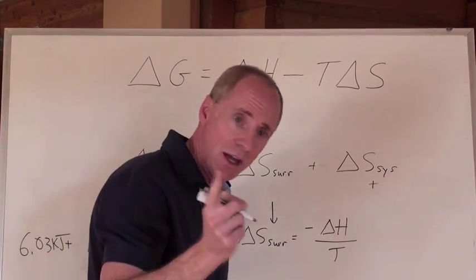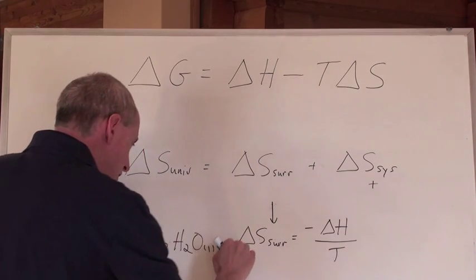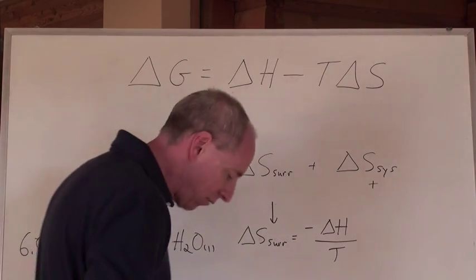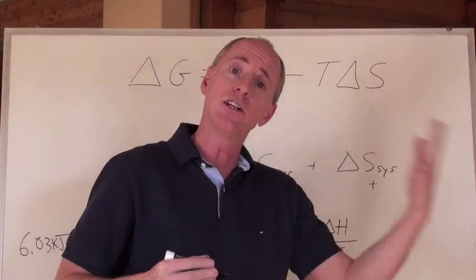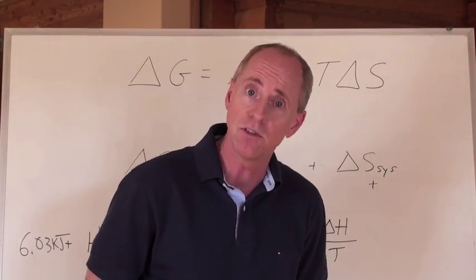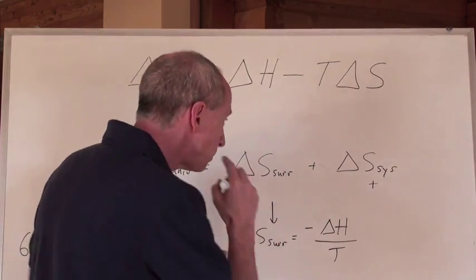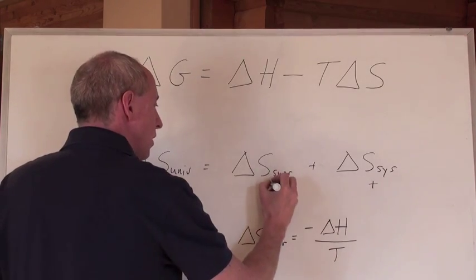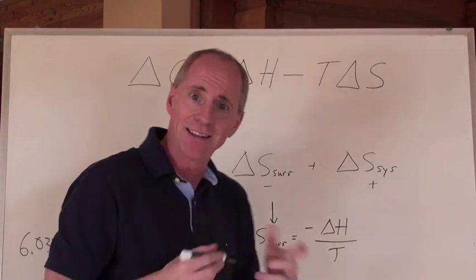In order for this reaction to be spontaneous, the delta S for the universe has to be positive. A spontaneous process will increase the entropy or the randomness of the universe. We know that this number is going to be a negative. We talked about that in the last lesson.